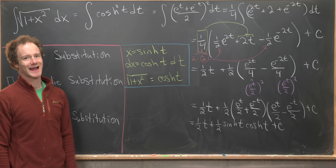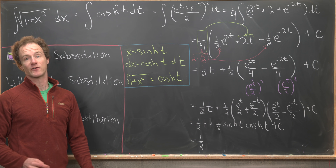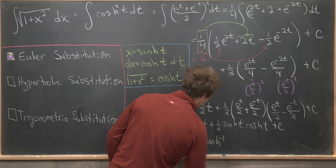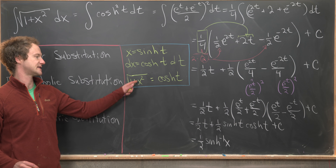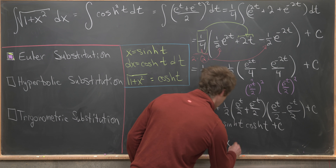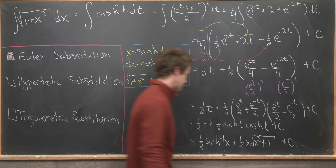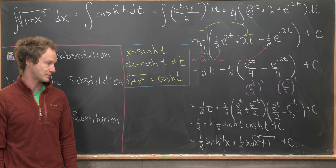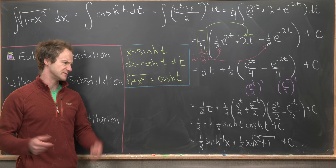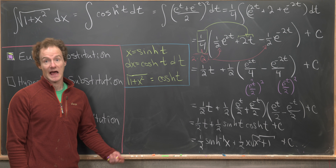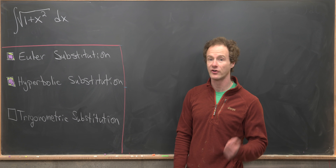Putting everything back into x-coordinates: t becomes sinh⁻¹(x), and since sinh(t) = x and cosh(t) = √(1+x²), the result is one-half sinh⁻¹(x) plus one-half x√(x²+1) plus C. This looks slightly different from Method 1, but sinh⁻¹(x) can be rewritten as ln|x + √(x²+1)|, making the two answers identical.